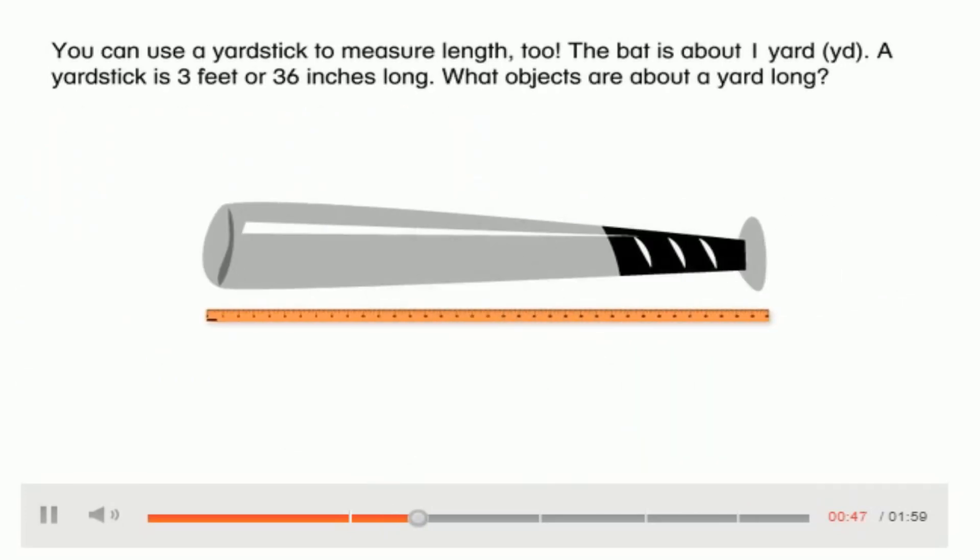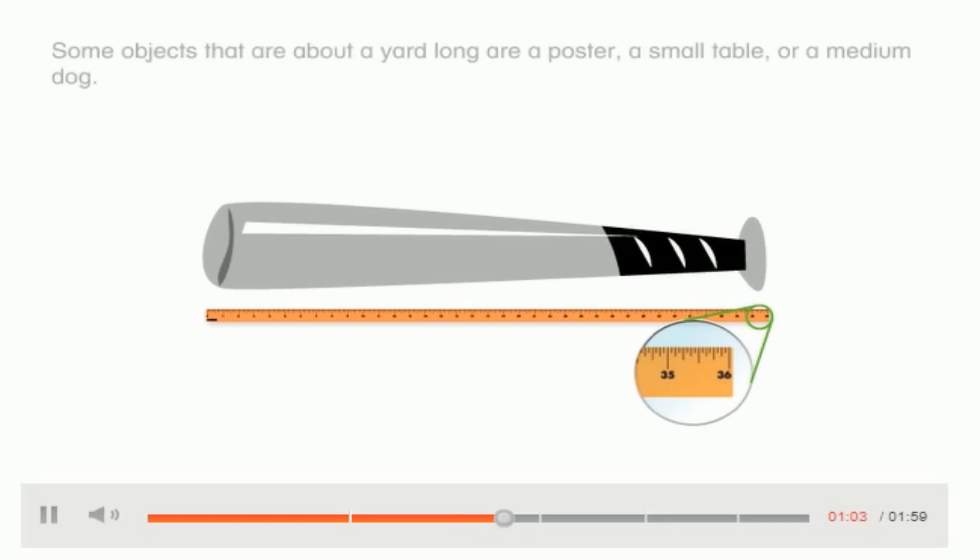You can use a yardstick to measure length too. The bat is about one yard. A yardstick is three feet or 36 inches long. What objects are about a yard long? Some objects that are about a yard long are a poster, a small table, or a medium dog.